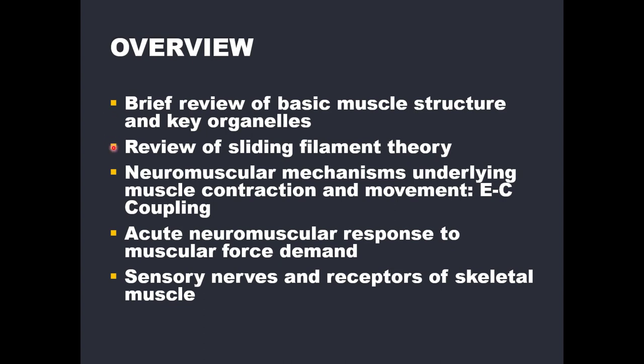We will then review the sliding filament theory, which some of you may or may not have heard of. This is the fundamental explanation of how a muscle and its muscle fibers shorten or lengthen while producing force — like when you curl a dumbbell, you shorten your bicep, and when you bring it back down, you lengthen the bicep, all while producing force. We will discuss what happens inside your muscle cells to allow the muscle tissue to shorten or lengthen. Then we will go through the neuromuscular mechanism underlying muscle contractions and movement, which will be the largest chunk of this lecture series — described by the term EC coupling, or excitation-contraction coupling.